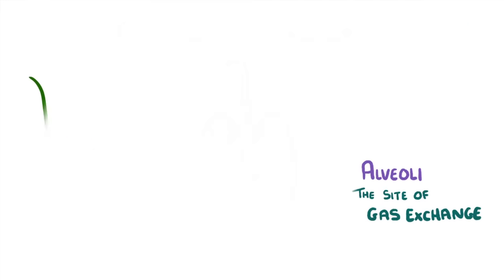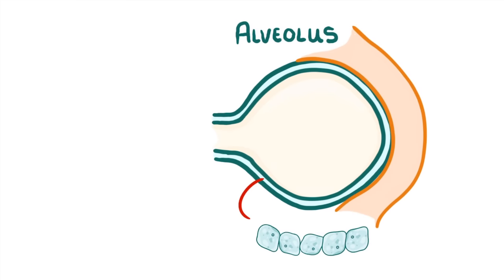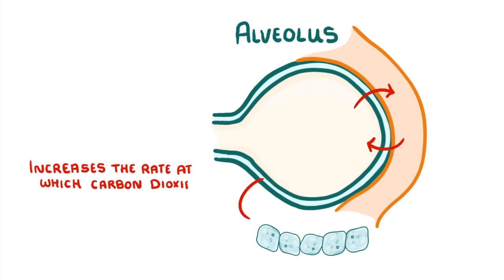Let's wipe all of this out and have a closer look at a single one of the alveoli, which we call an alveolus. The first thing to notice is that the alveoli are made up of just one layer of very thin cells, just like the blood capillaries that they're next to. This creates a really short diffusion pathway, which increases the rate that carbon dioxide and oxygen can diffuse across.